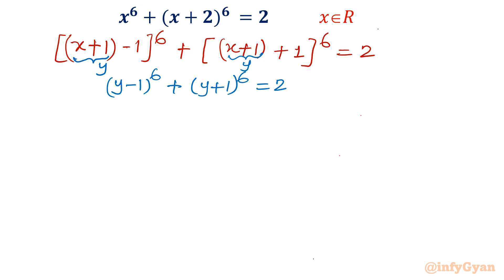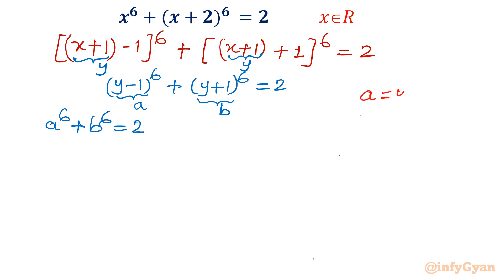Simple. Now let a = y-1 and b = y+1. So our equation is converted into a⁶ + b⁶ = 2. Let's talk about the values of a and b: a = y-1, b = y+1. We have a⁶ and b⁶ present.